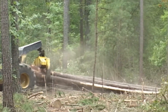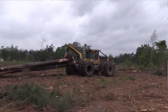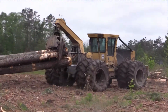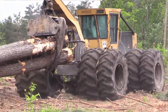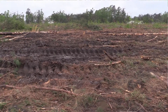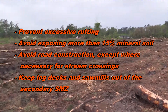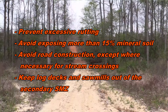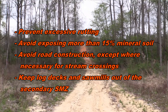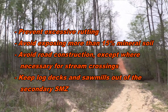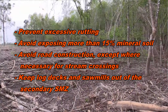The secondary zone starts at the end of the primary SMZ and extends up to an additional 120 feet depending on slope. In the secondary zone, all silvicultural harvest systems may be used, along with site preparation that does not significantly disturb surface soil. Be careful to prevent excessive rutting. Avoid exposing more than 15% mineral soil. Avoid road construction except where necessary for stream crossings, and keep log decks and portable sawmills out of the secondary SMZ.